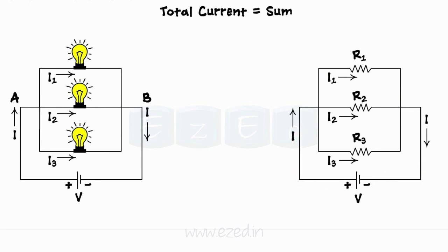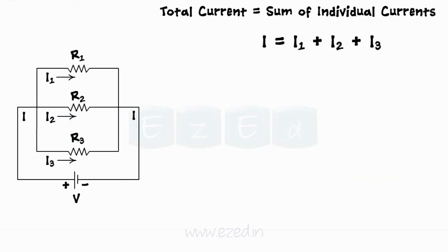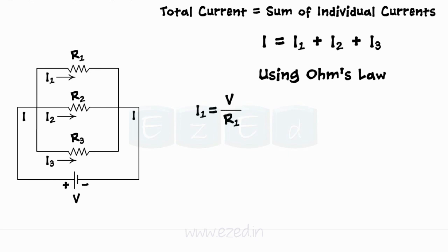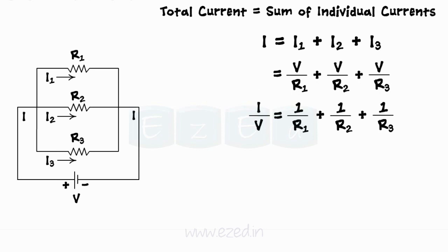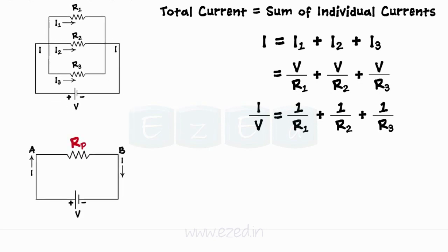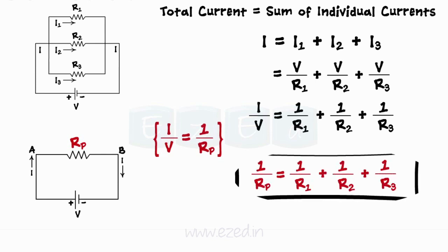The total current supplied by the source gets divided into parallel branches, but the total current always equals the sum of individual currents in every branch. Thus, I = I1 + I2 + I3. Applying Ohm's law to every branch: I1 = V/R1, I2 = V/R2, and I3 = V/R3. Therefore, I = V/R1 + V/R2 + V/R3. We can replace the three parallel resistances by the equivalent resistance Rp as: 1/Rp = 1/R1 + 1/R2 + 1/R3.